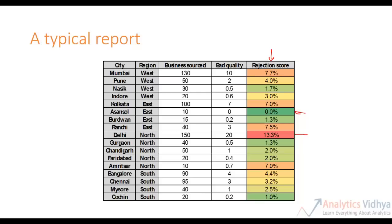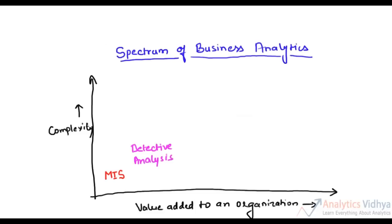Now, if you see, this report just tells you the state of business as a matter of fact. It gives no understanding about why this is so. The minute you start asking these questions, you move on to the next level of analytics. It is more complex than simple MIS reporting, but at the same time it adds more value to the business. This kind of analysis is typically known as detective analysis.